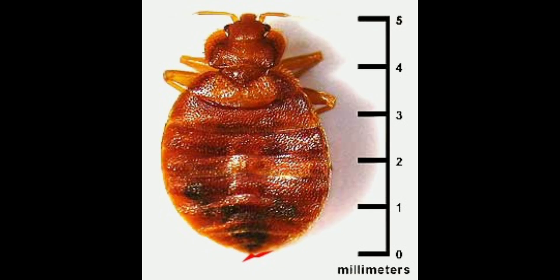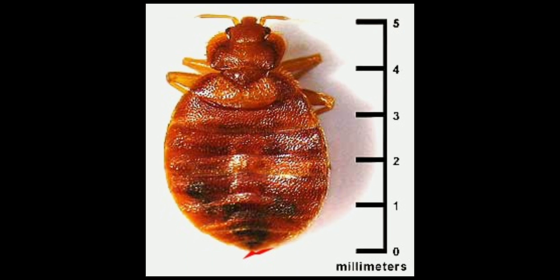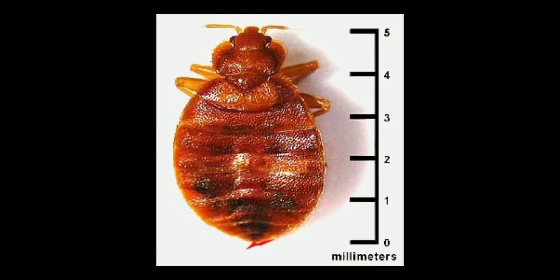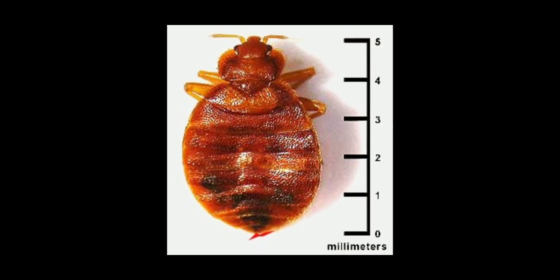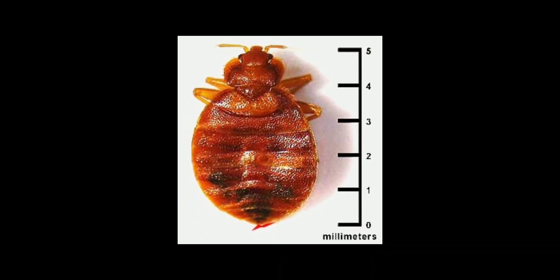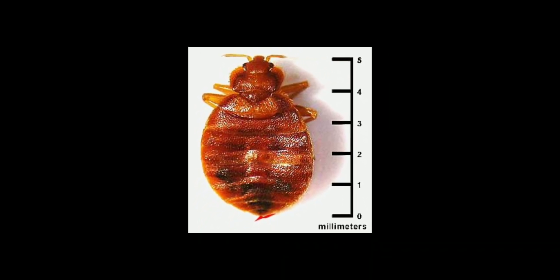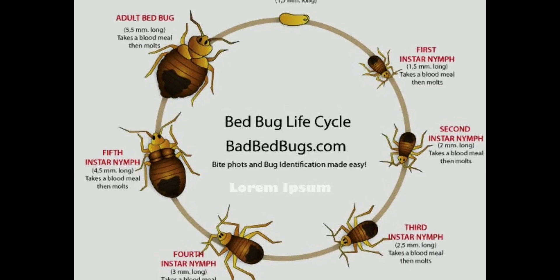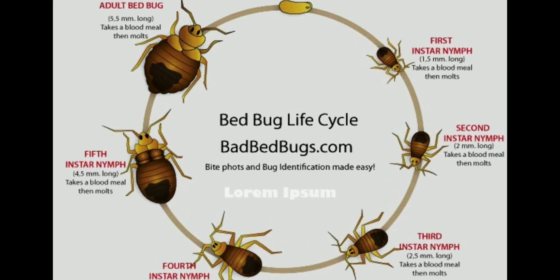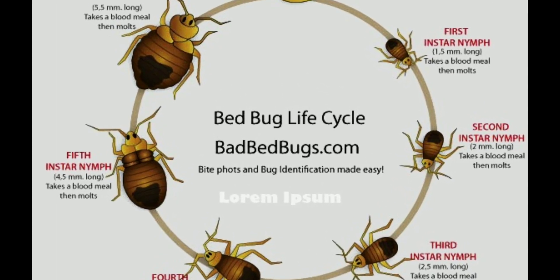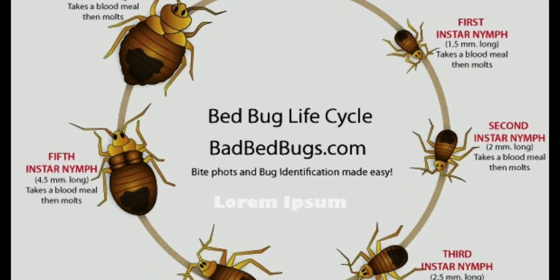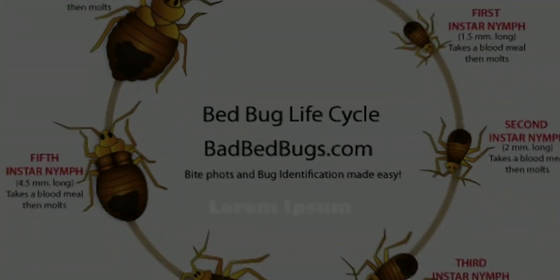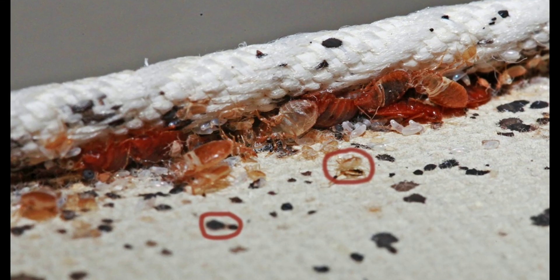Adult bedbugs are reddish-brown, oval-shaped, and about the size of an apple seed — approximately 4 to 5 millimeters long. The life cycle of a bedbug consists of several stages, and it typically takes about 4 to 5 weeks for them to develop from eggs to adults.